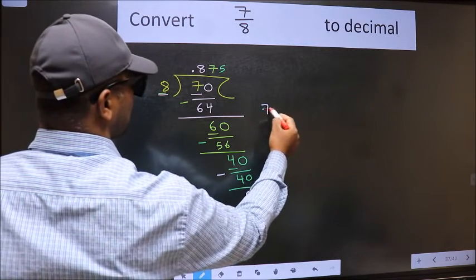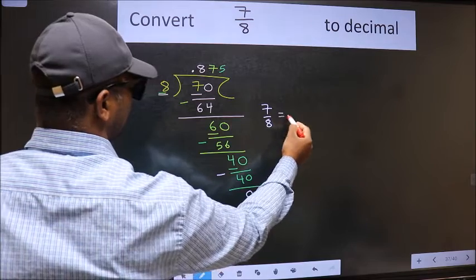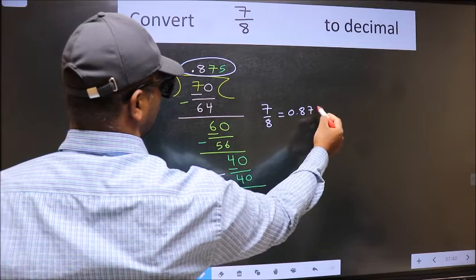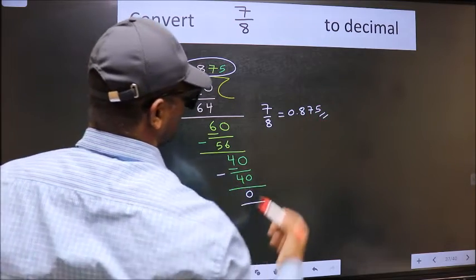So the decimal of 7 by 8 is this. That is 0.875 is our answer.